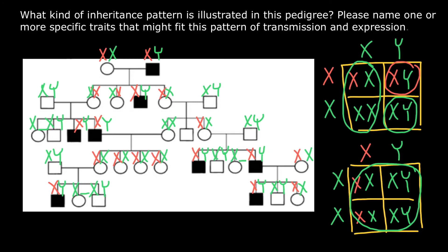Now, as for the second part of this question — please name one or more specific traits that might fit this pattern of transmission and expression — the most popular answer would be red-green colorblindness, which follows this pattern. The second would be hemophilia. Both of these genetic disorders are X-linked recessive genetic disorders. And this is all for today. Thank you for your attention. Please subscribe for my new videos that I post almost every day. See you in the next video.